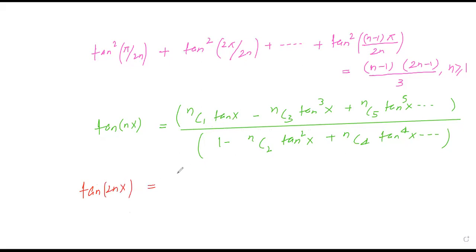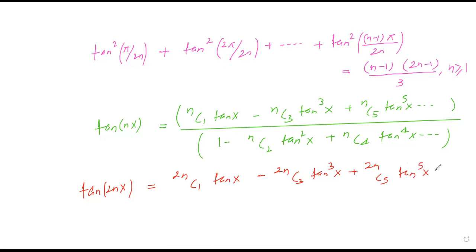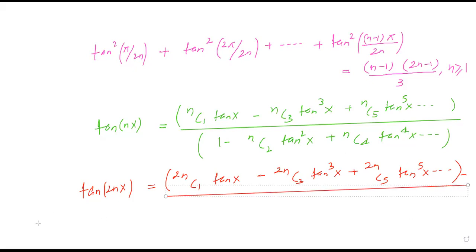For tan(2Nx), I got: 2Nc1·tanx − 2Nc3·tan³x + 2Nc5·tan⁵x − ... upon 1 − 2Nc2·tan²x + 2Nc4·tan⁴x − ...